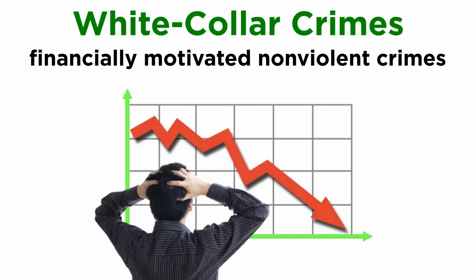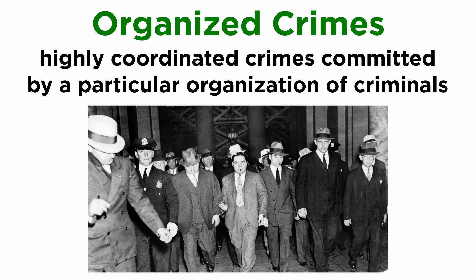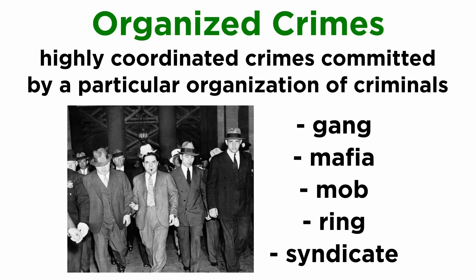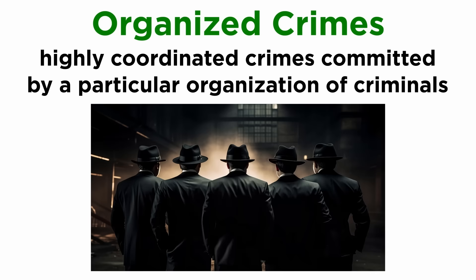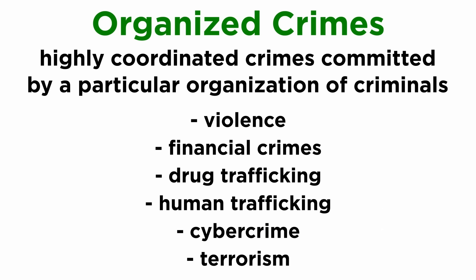Finally, organized crimes involve highly coordinated crimes committed by a particular organization of criminals. A criminal organization can also be referred to as a gang, mafia, mob, ring, or syndicate. Most of them are politically, financially, or communally motivated. They commit crimes in the form of violence, financial and white-collar crimes, drug trafficking, human trafficking, cyber crime, terrorism, and more.